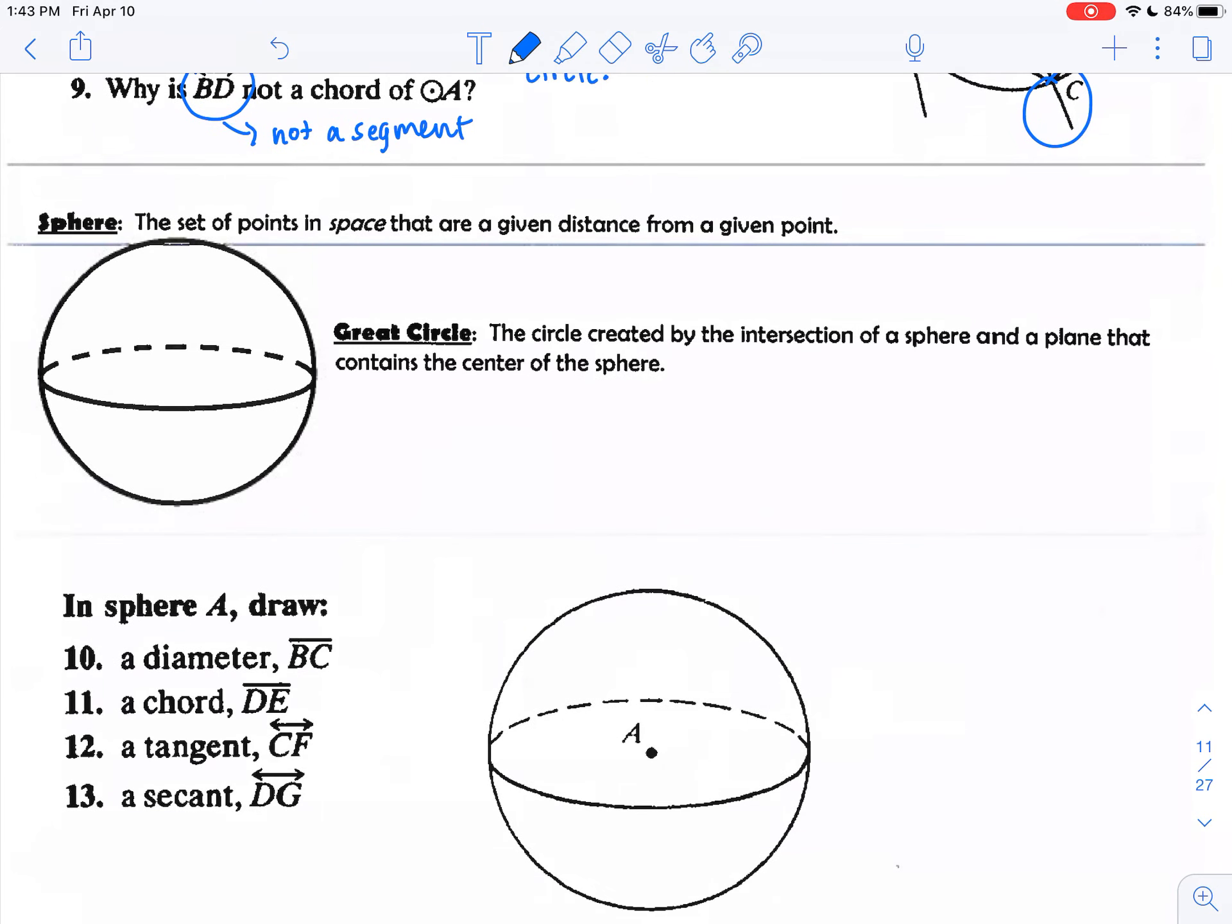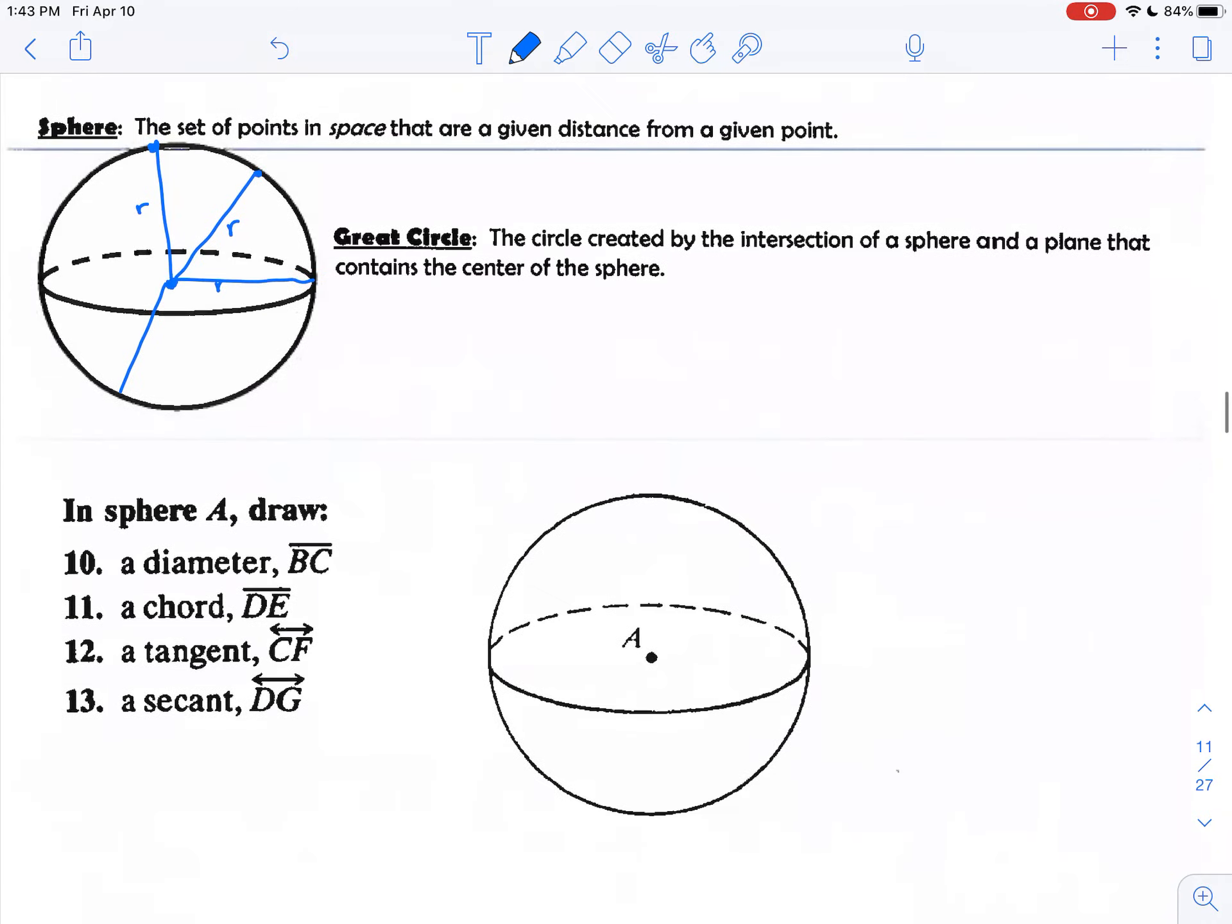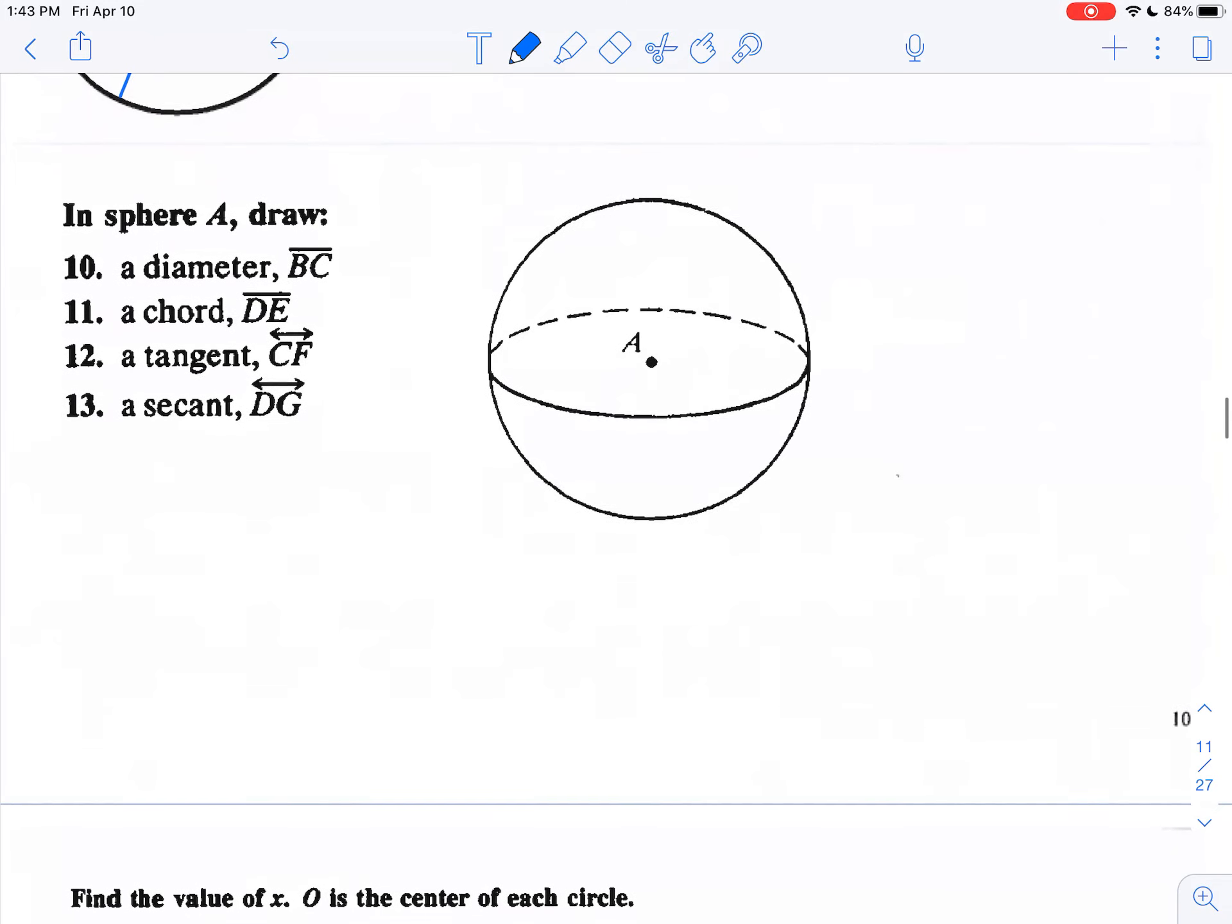A sphere is a three-dimensional version of a circle, in which case it's the set of all points in space such that you have the center of the sphere being the center of the great circle, and every point that is on the sphere is equidistant from the center. So this is all various ways of representing the radius or the radii.